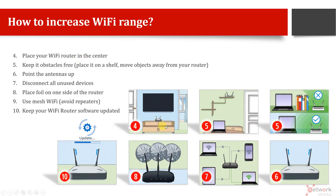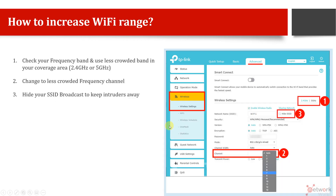You can place your Wi-Fi router in the center of your home at a proper location, point the antennas properly, disconnect all unused devices and remove them, and blacklist their MAC addresses if you don't recognize them. You can use some foil to get proper signal direction. Always use mesh networking and avoid cheap repeaters to avoid IP conflicts and SSID conflicts, and keep your Wi-Fi router software always updated.